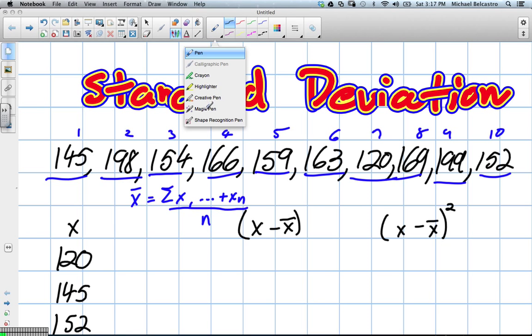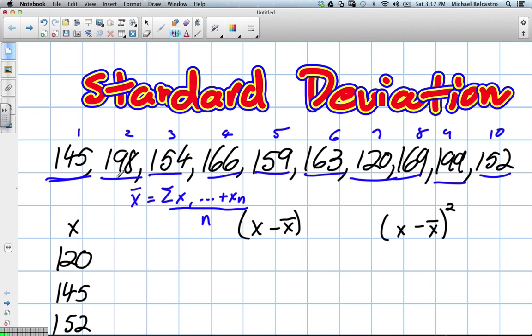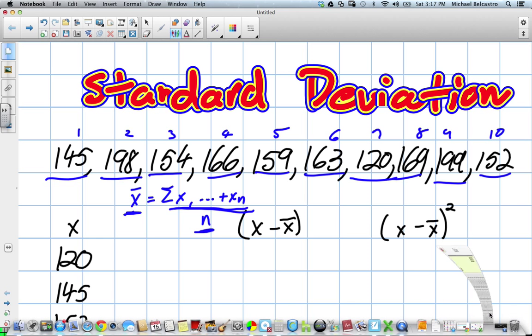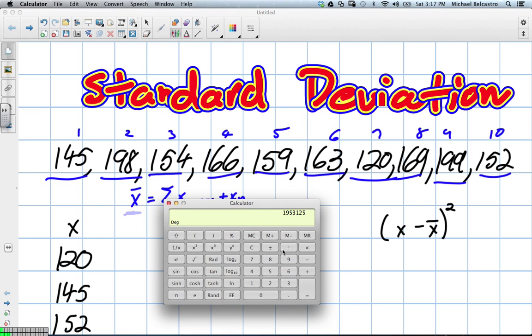We're going to talk about the standard deviation. We've set a lot of information up already. These are the values they've given us. We know that there are 10 values. The first step to finding standard deviation is we have to find the mean, and the mean is the sum of all of the data added together divided by the number of data. So we'll work together to find the mean. It's not the hardest part, so I want you to do it with me.